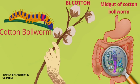After entering the gut region, the crystal gets solubilized and it binds to the mid gut region. There it causes pores. So, the cell starts swelling and cell lysis takes place. At the end, the cell will burst, leading to the death of the insect.